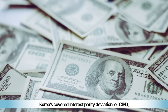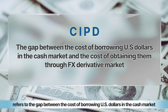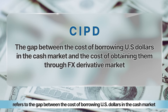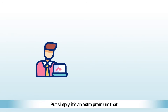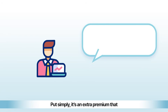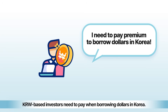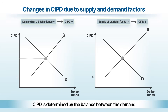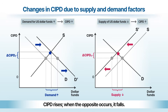Korea's Covered Interest Parity Deviation, or CIPD, refers to the gap between the cost of borrowing U.S. dollars in the cash market and the cost of obtaining them through the FX derivative market. Put simply, it's an extra premium that KRW-based investors need to pay when borrowing dollars in Korea. CIPD is determined by the balance between demand and supply in the market for dollar funding. When demand expands or supply contracts, CIPD rises; when the opposite occurs, it falls.